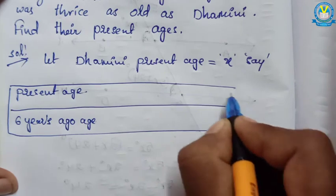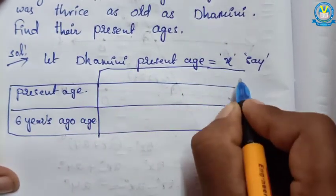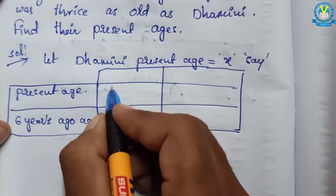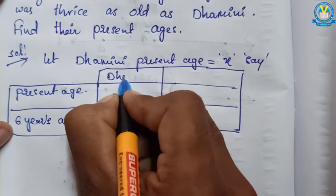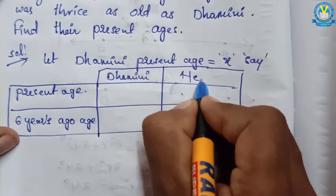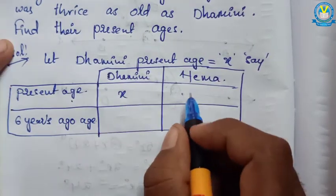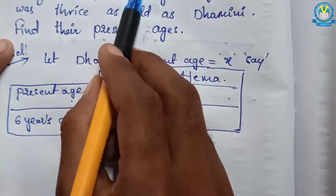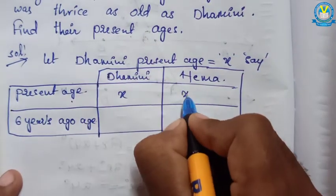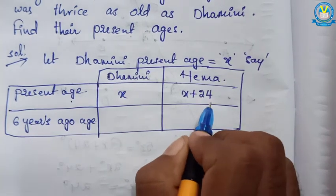I can use a table form. This is Domini, this is Hama. Present age of Domini equals x. But Hama is 24 years older than her daughter, that means x plus 24. So present age of Hama is x plus 24.